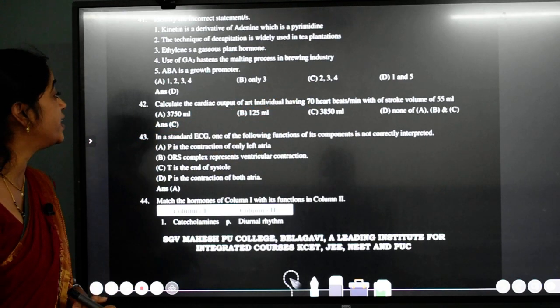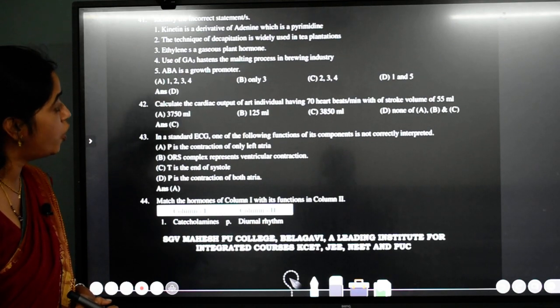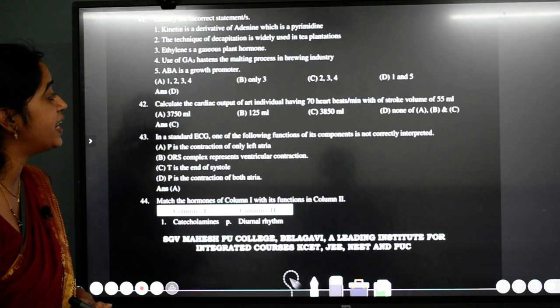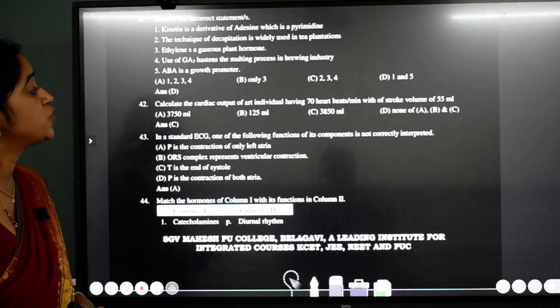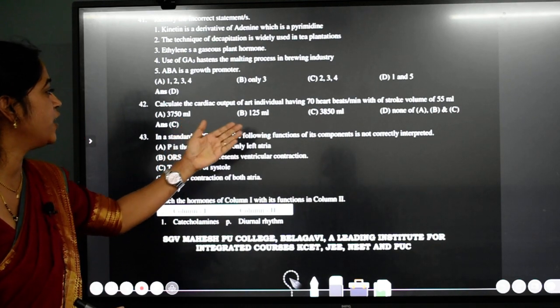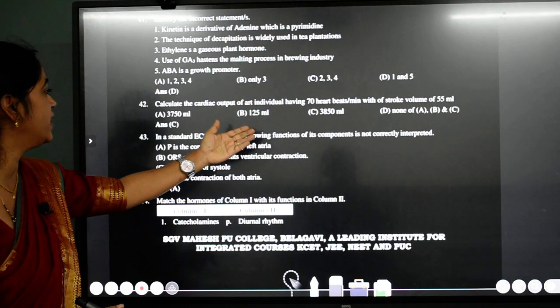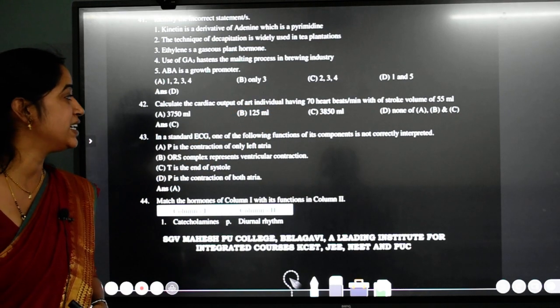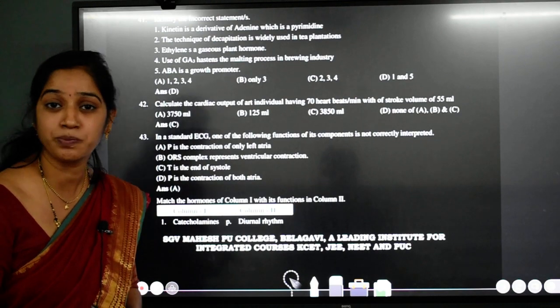42nd question. Calculate the cardiac output of an individual having 70 heartbeats per minute with a stroke volume of 55 ml. Simple question student. If you multiply both of them, you will get the answer. And the answer is here. See that is 3850. Just multiply and check.